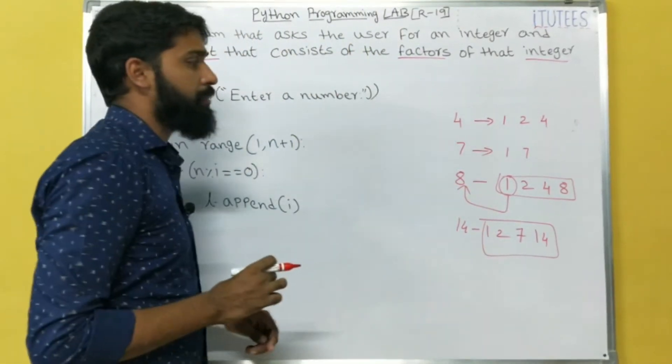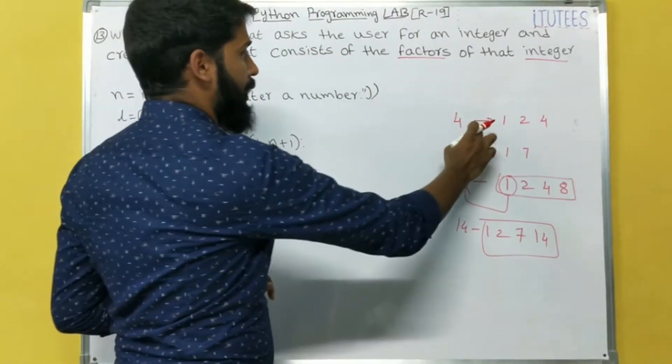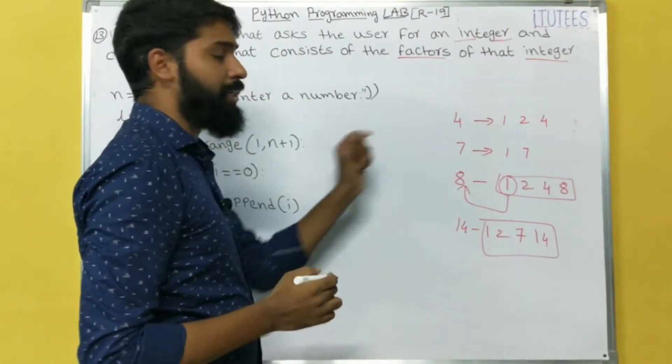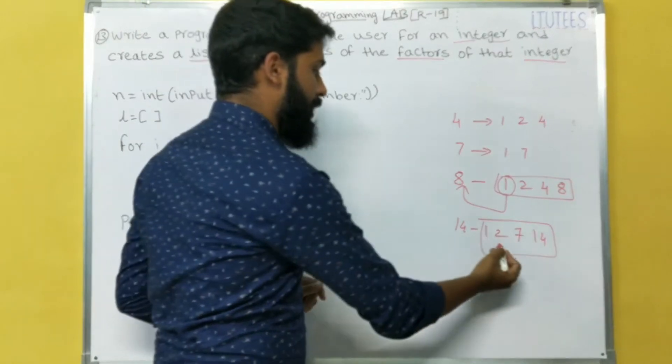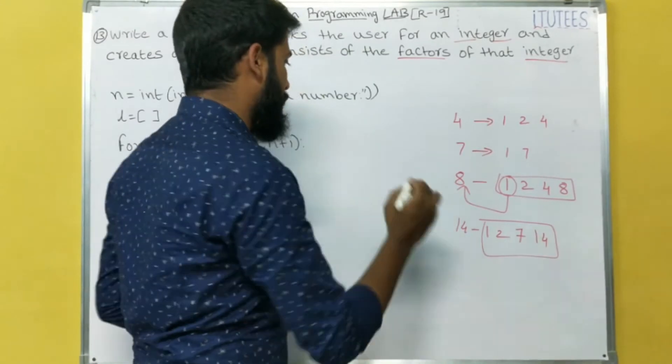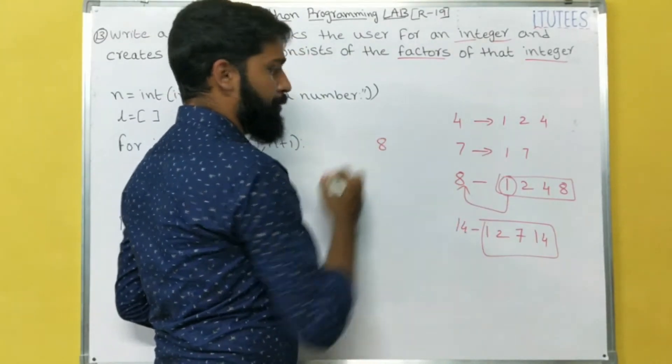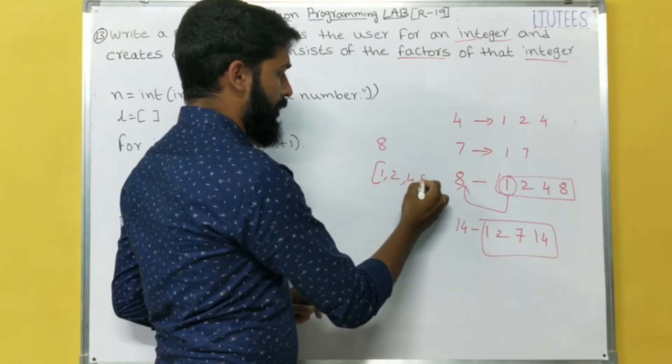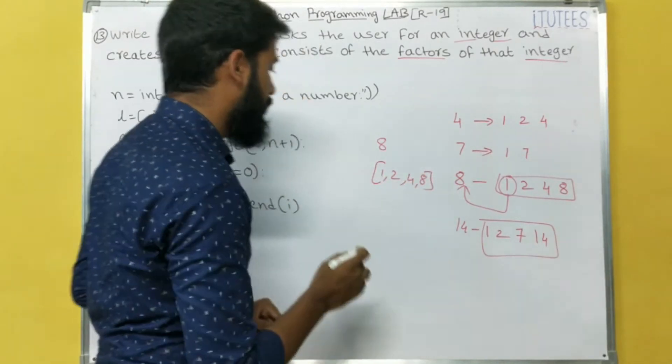Now, if the question is, they are giving one number, integer. So for that integer, you are going to find the factors and store these factors in one list, print the list. That's it. That means if you are giving 8 as input, what is the output? The output is 1, 2, 4, 8. That's it. So now you can check that.